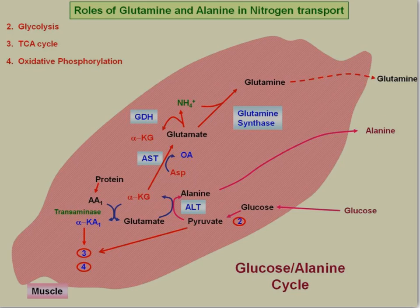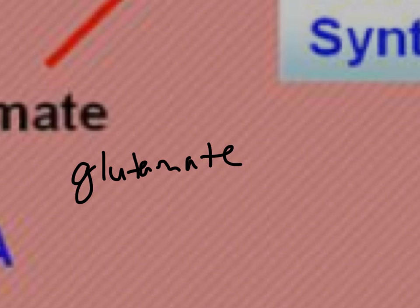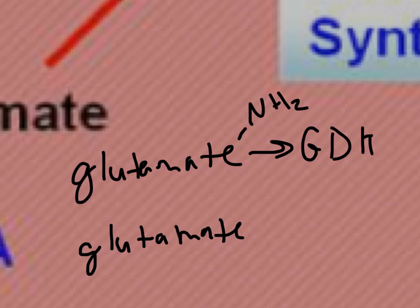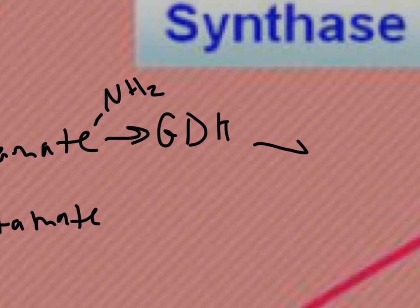Or, for example, if aspartate were to transfer a nitrogen to alpha-ketoglutarate to form glutamate, that's one of the amino acids. We could have glutamate here, and it could release the nitrogen, which would be incorporated into glutamine, reforming alpha-ketoglutarate. What happens is glutamate dehydrogenase will release the amine group. So if we have two glutamates, one glutamate will be acted on by glutamate dehydrogenase to release the NH2 or NH3 group, and you get production of alpha-ketoglutarate.